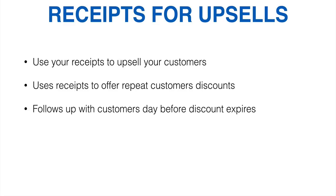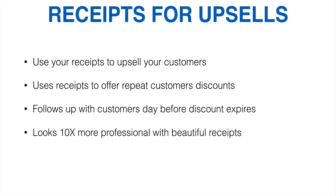Every single receipt you send out will have a little discount — maybe a 10% off discount code, or whatever you want it to be. It gives people 30 days to use that code, or 90 days, or whatever you set. It will recognize when that code is about to expire and email your customer 24 hours in advance saying: 'Your coupon code expires tomorrow, so use it right now.' I can't tell you how many times that's gotten me sales. It's literally like free money because it adds urgency and it's all automated.